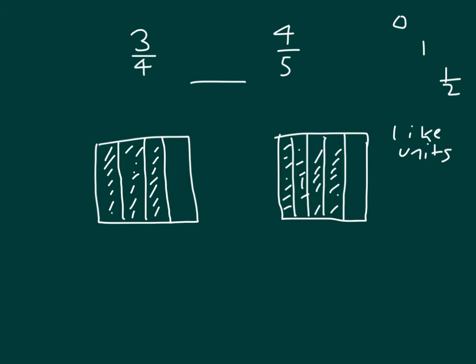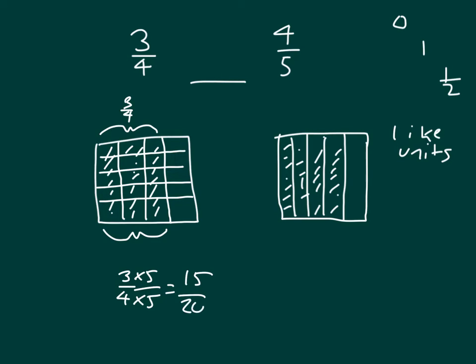Do we have like denominators? Nope, we don't. What we could do though is draw horizontal lines to divide our first model into 5 parts—1, 2, 3, 4 lines. Now, instead of 3 fourths, we are looking at what? We went from 3 fourths and multiplying by 5 in the numerator and denominator, we got to 15 twentieths. 5, 10, 15 out of 20.